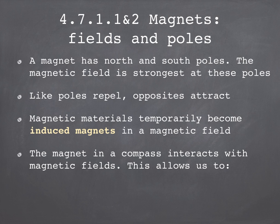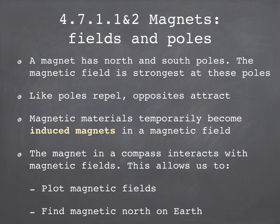Inside a compass, there's a small bar magnet, and that magnet interacts with other magnetic fields, and this allows us to plot magnetic fields, and to find magnetic or north on Earth in order to navigate.